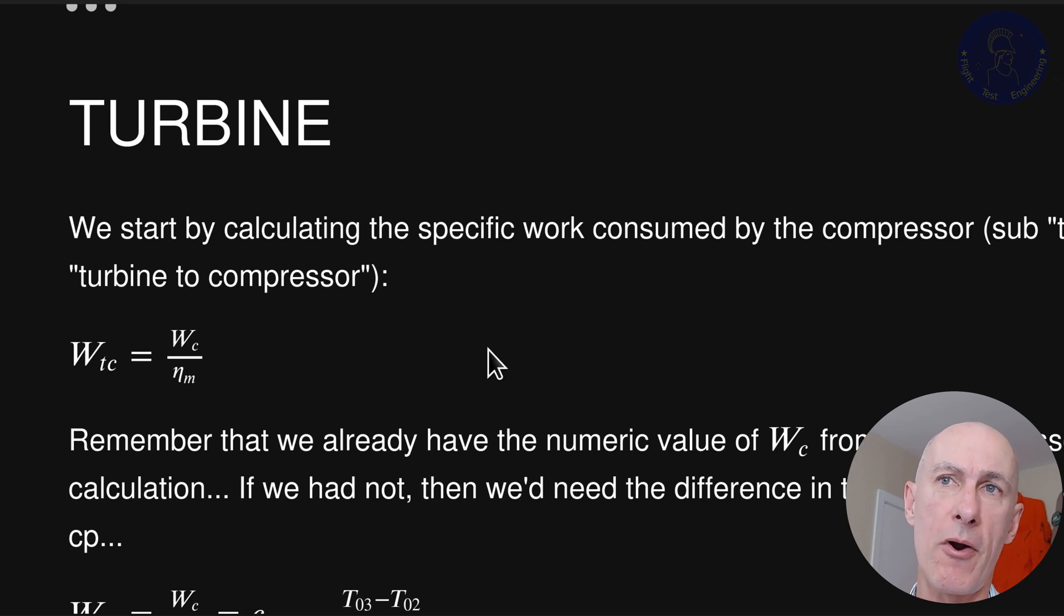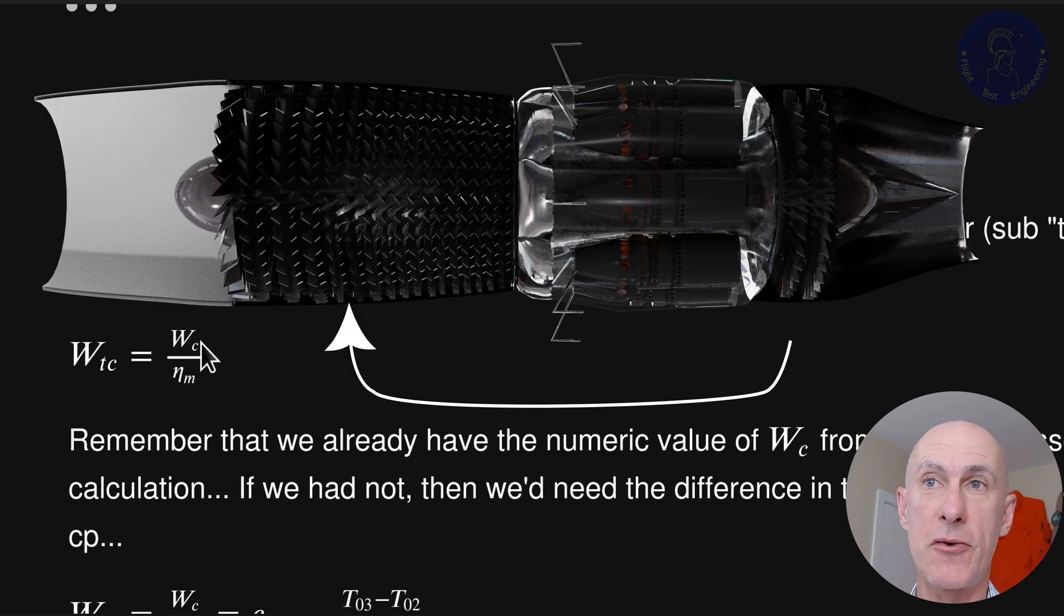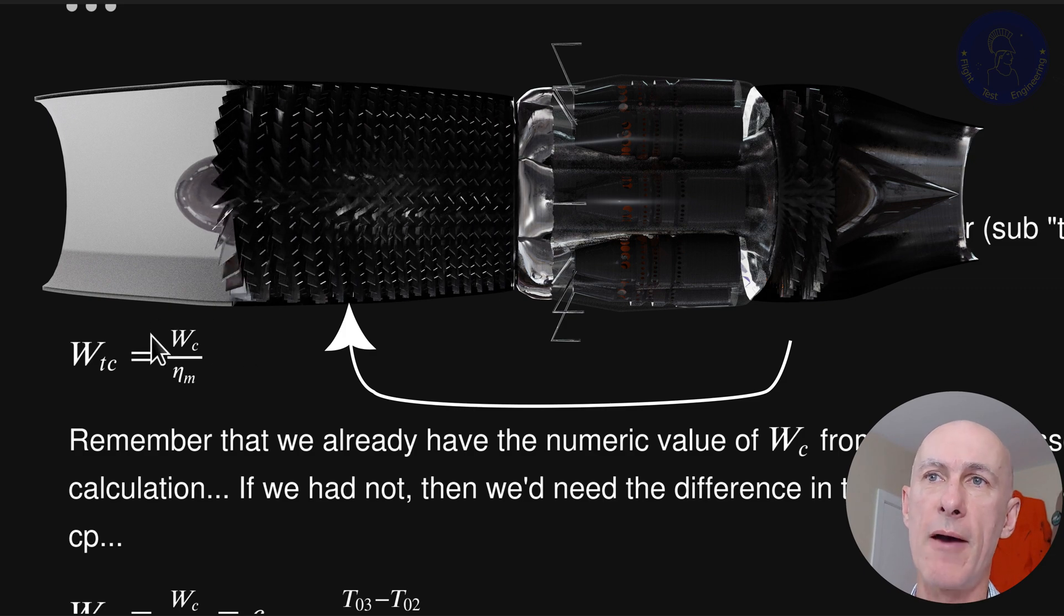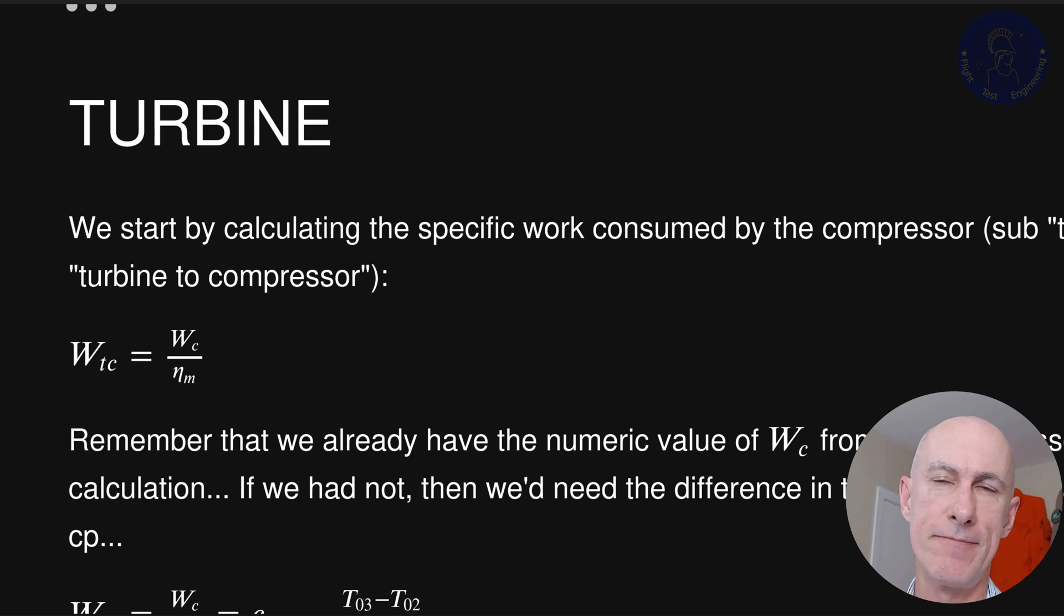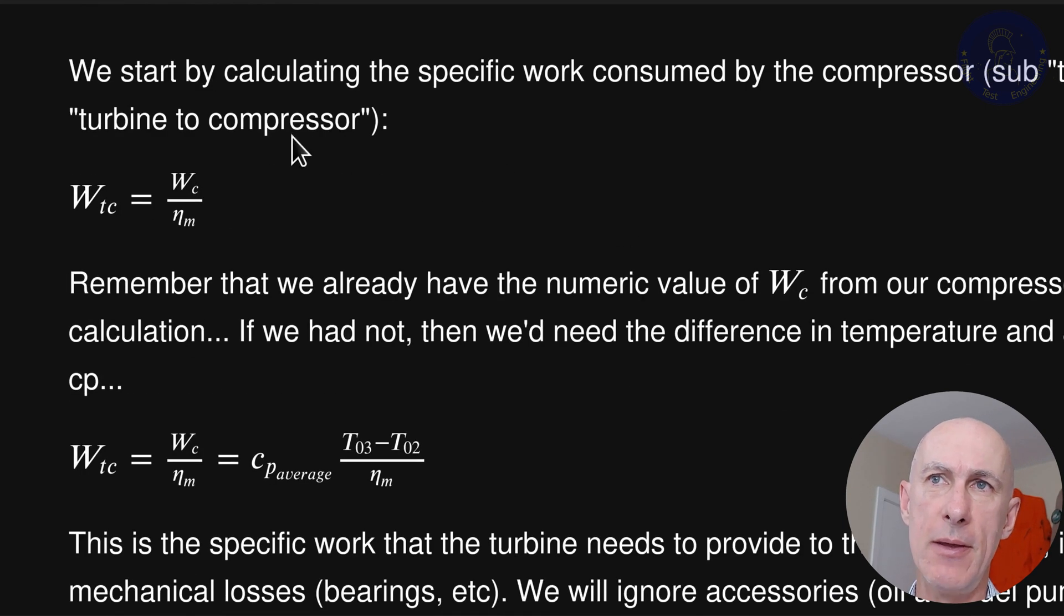Note that from our compressor video we calculated the work required to compress the gas, calling it WC. The turbine now must extract enough mechanical work to drive the compressor. So we start with that. We now need to factor in the mechanical losses, for example bearing friction. We do this by dividing the work at the compressor by eta m to get the actual work needed by the compressor plus the mechanical losses. We call this WTC.